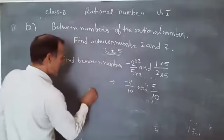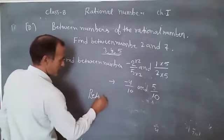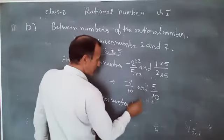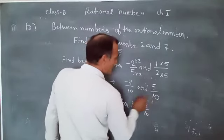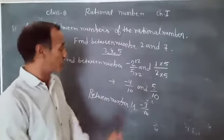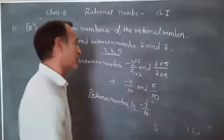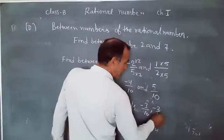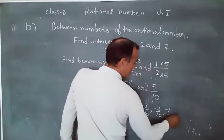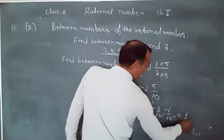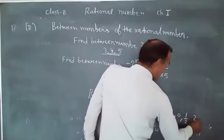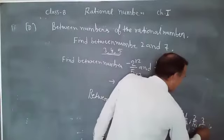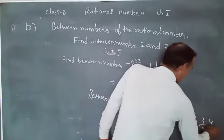So between number is minus 3 upon 10. Because 10 is no matter that both digits have the same number. Minus 3 upon 10, minus 2 upon 10, minus 1 upon 10, 0, 1 by 10, 2 by 10, and 3 by 10, 4 by 10. So all are the between numbers.